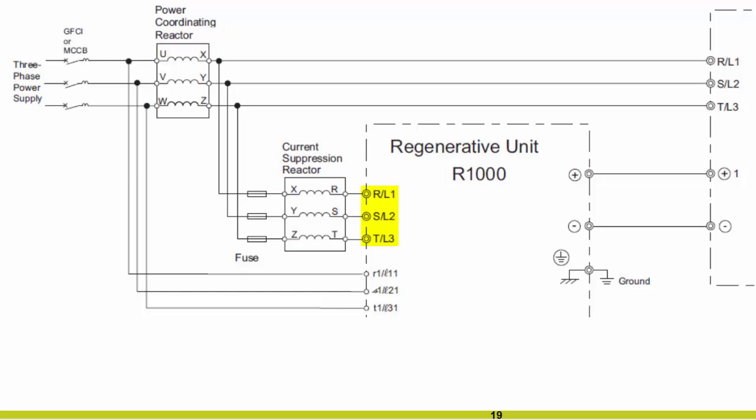The capital RST terminals are the power supply inputs. These terminals power the R1000. Now, despite them being called inputs, they are also outputs. This is because this is where the regenerative power goes back onto the line. To clean up the regenerative power, in line with that is a current suppression reactor and also some fuses for protection. The power coordinating reactor is wired before the fuses. The second set of the input terminals, lowercase r1, lowercase s1, and lowercase t1, are used for detecting phase order. Notice how these wires are landed before all of the reactors. These wires are necessary so that the R1000 can properly apply the regenerative energy back to the utility with the correct phasing.